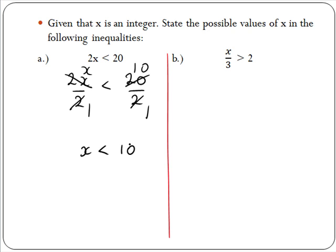This means if we put any integer less than 10 into our original inequality in place of x, the inequality will remain true. So if we take x to be 8, we will have 2 times 8 which gives us 16, and 16 is less than 20. But if we take x to be a number greater than 10, it won't satisfy the inequality. For example, x equals 11 would give us 2 times 11 which is 22, and 22 is not less than 20.